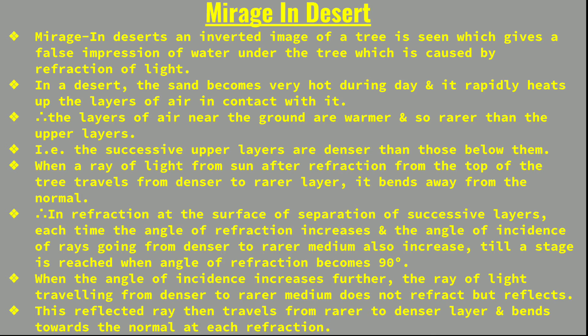Another example is the mirage. In deserts, an inverted image of a tree is seen, giving a false impression of water under the tree. This is caused by refraction of light. Since water is scarce in deserts, seeing what appears to be a reflection of a tree gives the false idea that there must be water nearby.